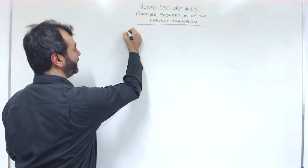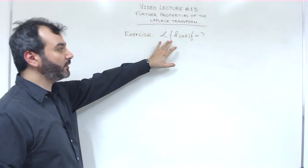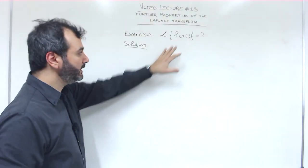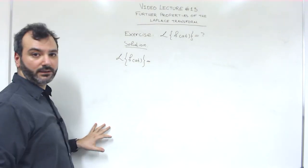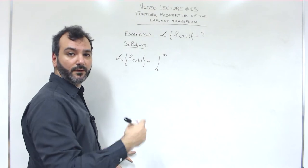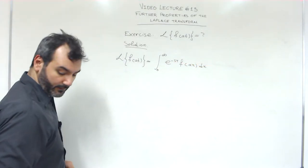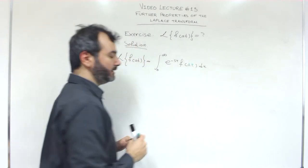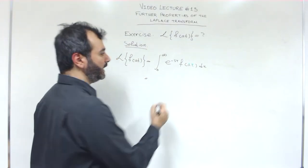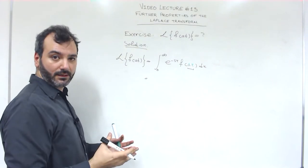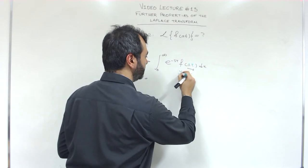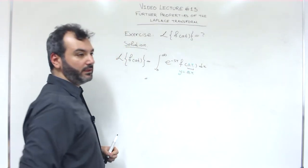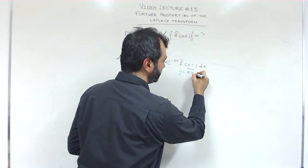Exercise one: what is the Laplace transform of a function f evaluated at a times t, instead of t? We simply write the Laplace transform using the definition: we have e to the minus s tau, and the only difference from the classical definition is that instead of tau we have a times tau. To make this look more like a Laplace transform, we introduce a new variable y equals a times tau.